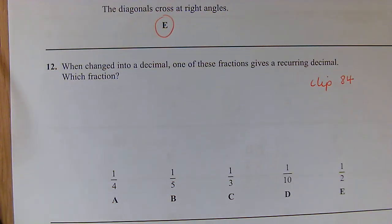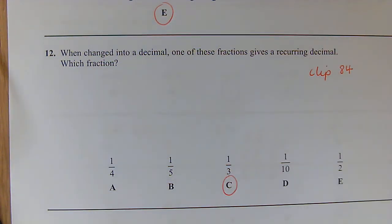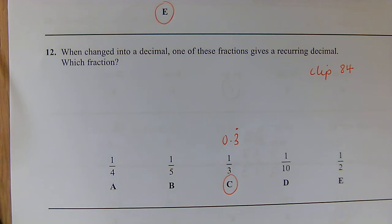Question 12: When changed into a decimal, one of these fractions gives a recurring decimal. Which one? That is going to be our one-third, as that is our 0.3 recurring.